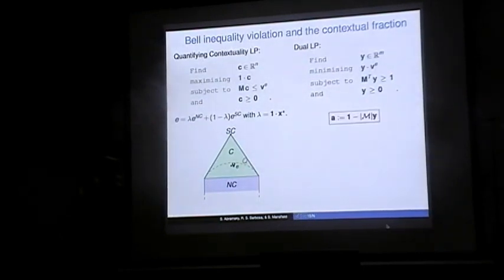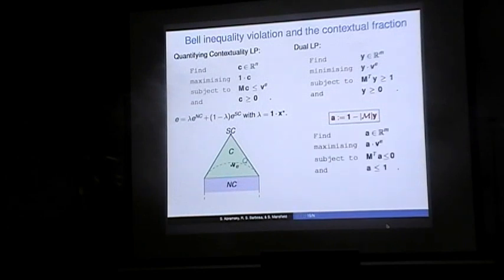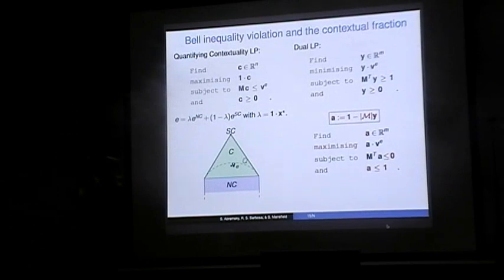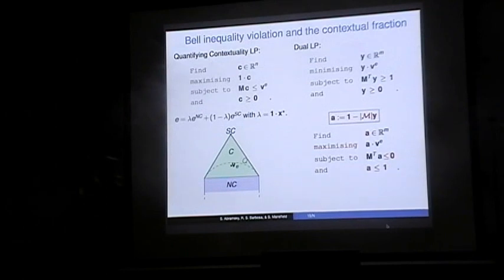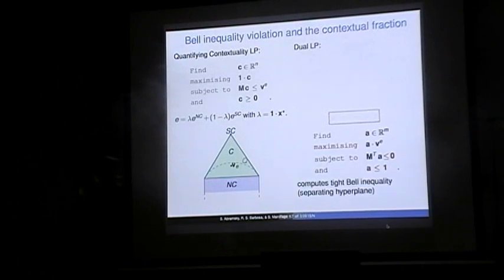We find the Bell inequality by considering the dual linear program. Taking A = 1 minus the number of contexts times Y, and rewriting the dual, we get a linear program: find a vector A of Bell inequality coefficients that maximizes the value attained on the left-hand side, subject to the constraint that this is a Bell inequality with bound zero — meaning every non-contextual model satisfies the Bell inequality with bound zero. This linear program can be used to compute the tight Bell inequality, which corresponds to separating the output plane — it separates the model from the non-contextual polytope.